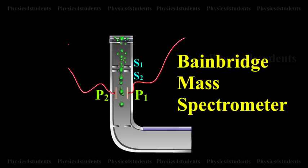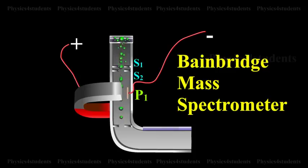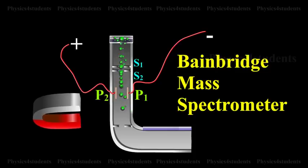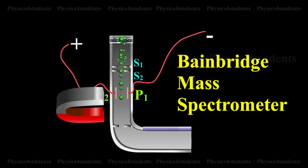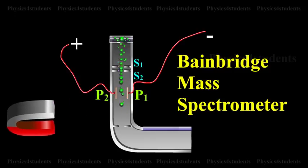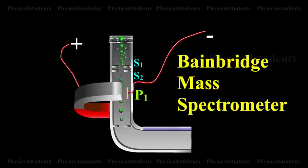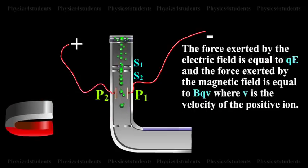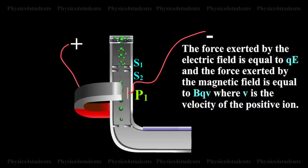The electric field and magnetic field are so adjusted that the deflection produced by one field is nullified by the other so that the ions do not suffer any deflection within the velocity selector. Let E and B be the electric field intensity and magnetic induction respectively and Q be the charge of the positive ion. The force exerted by the electric field is equal to QE and the force exerted by the magnetic field is equal to BQV where V is the velocity of the positive ion.